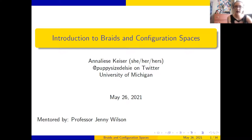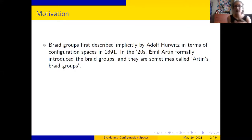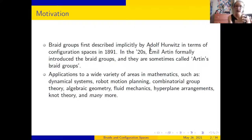Full disclosure, I've had a little bit of a weird health week, so I'm not at the top of my game, but we're just gonna go with it. So a little bit of motivation: braid groups are an object that were first described in terms of configuration spaces, which are much older objects, in 1891. They were formally introduced by Artin in the 20s, so they're sometimes called Artin's braid groups. Both configuration spaces and braid groups have a really broad range of applications.